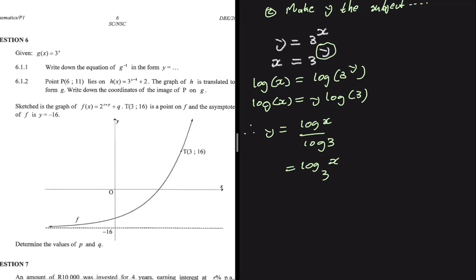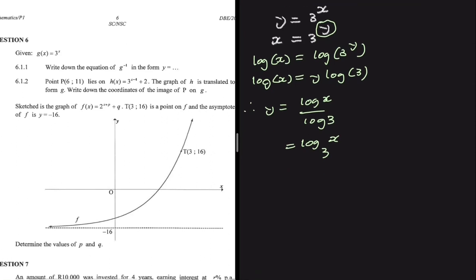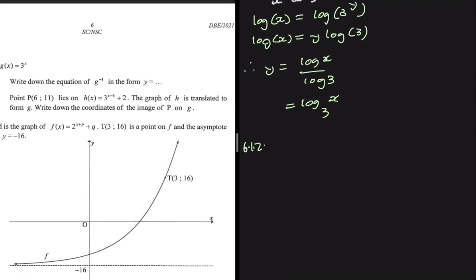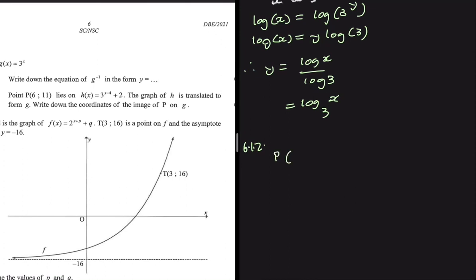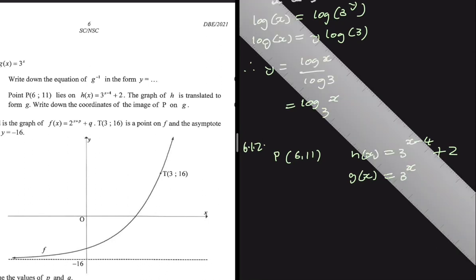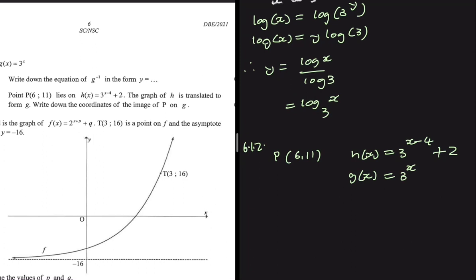We can write this as y equals log base 3 of x, and that is the equation of g inverse. That's 6.1.1 done — easy and straightforward. For 6.1.2, point P with coordinates (6, 11) lies on h of x, where h of x equals 3 to the power (x minus 4) plus 2. The graph of h is translated to form g, and we need to find the coordinates of the image of P on g.